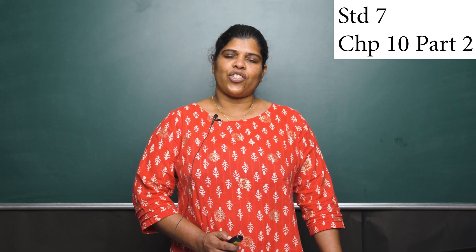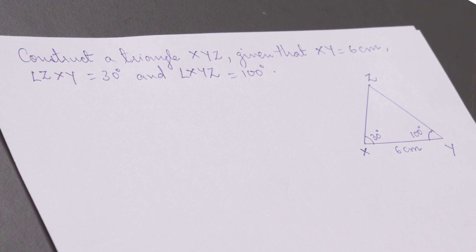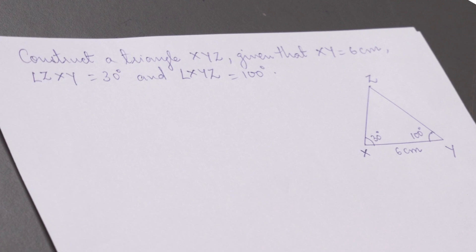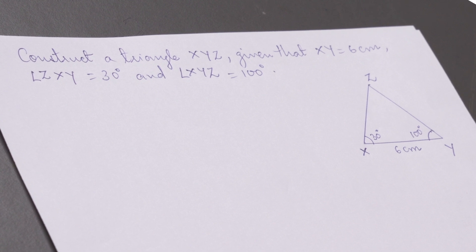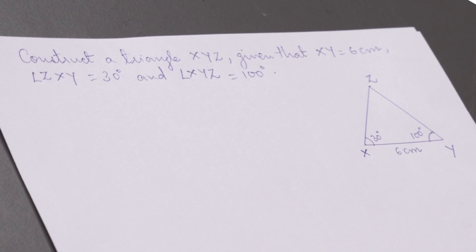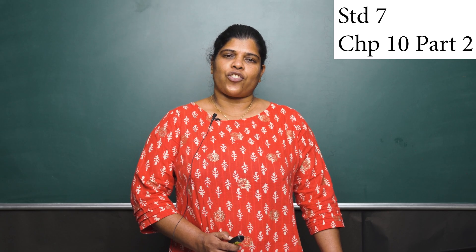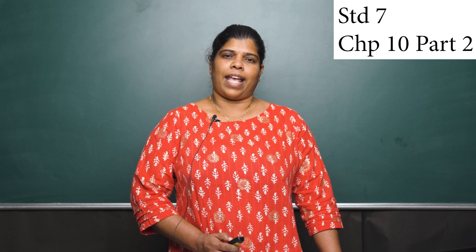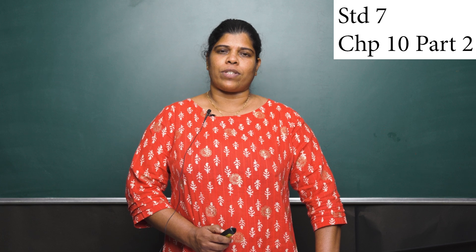Let us see how to construct such a triangle. Construct a triangle XYZ given that XY is equal to 6 cm, angle ZXY is equal to 30 degrees, and angle XYZ is equal to 100 degrees. Before constructing this triangle, draw the rough sketch, making sure the two angles are at the two ends — both angles must be at the base of the triangle.